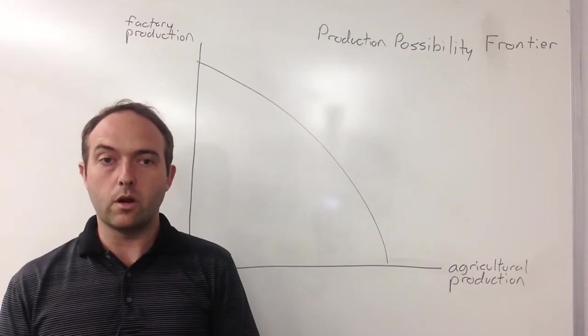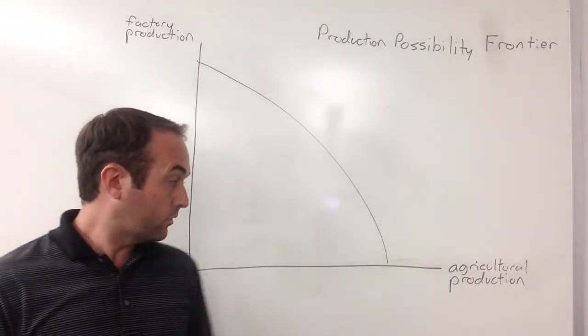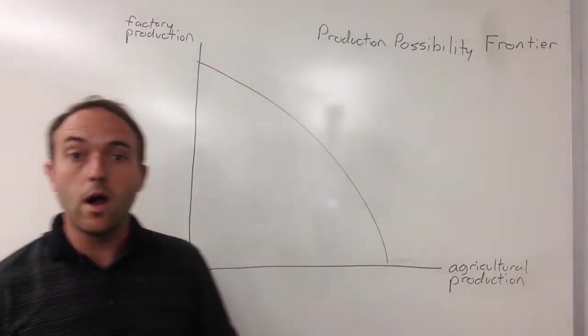The graph I've got presented for you here has a society that can make two different types of products: agricultural products here on your x-axis, and factory products represented here on your y-axis.